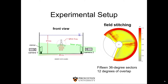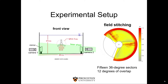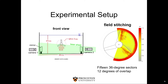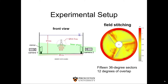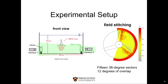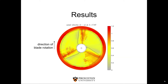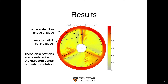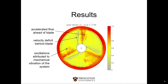Of course we still have issues of optical access — the fuselage blocks our view so the cameras can only see one sector beneath the fuselage at any one time. What we've done is average fields over 200 rotations, taking 36-degree sectors. We take 15 of those with 12 degrees of overlap between them, and we stitch them together smoothly as shown by the video on the right. For one tip speed ratio — and the same general patterns are observed for all tip speed ratios investigated — we have a region of accelerated flow ahead of the blade and a velocity deficit behind it, both consistent with the expected sense of the blade's circulation. We also observe interesting oscillations in the flow field just ahead of the blades, attributed to mechanical vibrations that cannot be entirely eliminated.